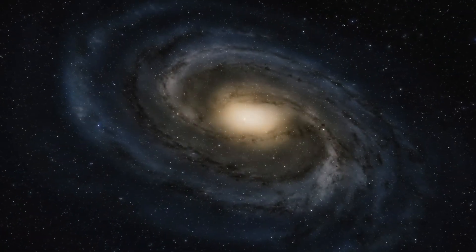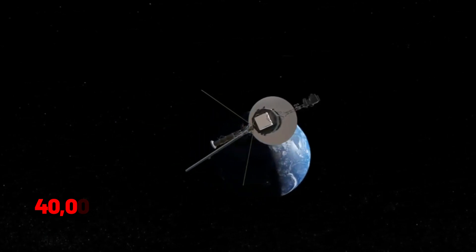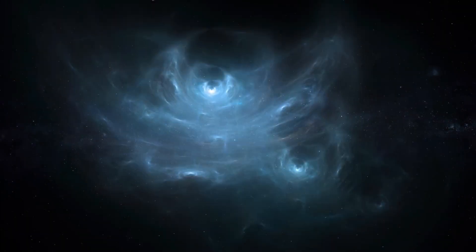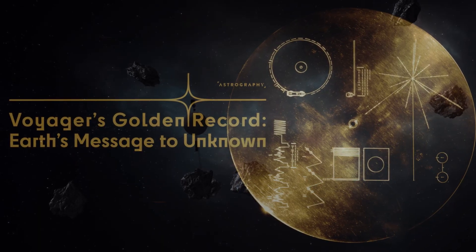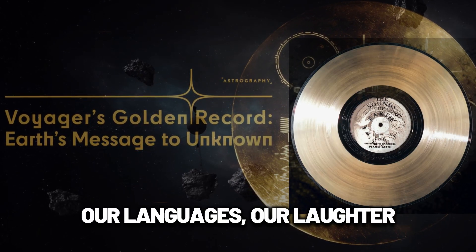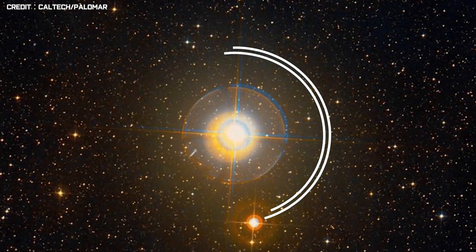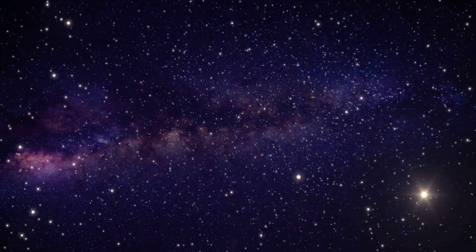But even then, their journey won't end. Voyager 1 and 2 will continue coasting through the galaxy, untouched, unchanged, long after Earth has forgotten them. In 40,000 years, Voyager 1 will drift near a star in the Camelopardalis constellation. In 296,000 years, Voyager 2 will pass 4.3 light-years from Sirius. And if someone, somewhere, someday, finds these tiny ships, they'll find a golden record. A time capsule of our songs, our languages, our laughter. A portrait of Earth etched into copper and gold. Maybe that's the real discovery. That in the infinite quiet of space, humanity once spoke. And maybe, just maybe, someone will listen.